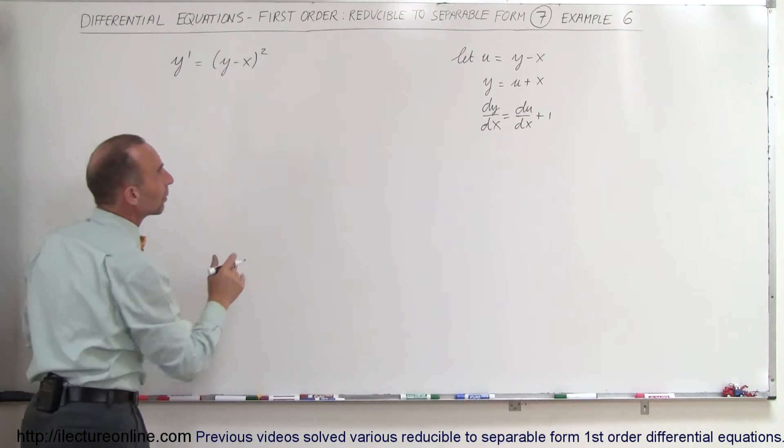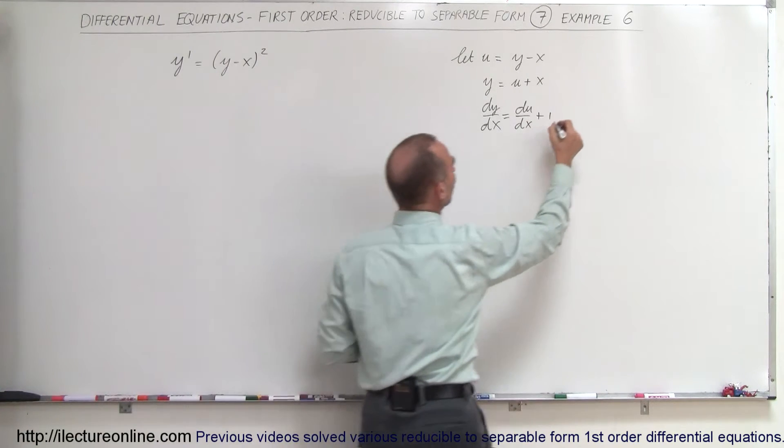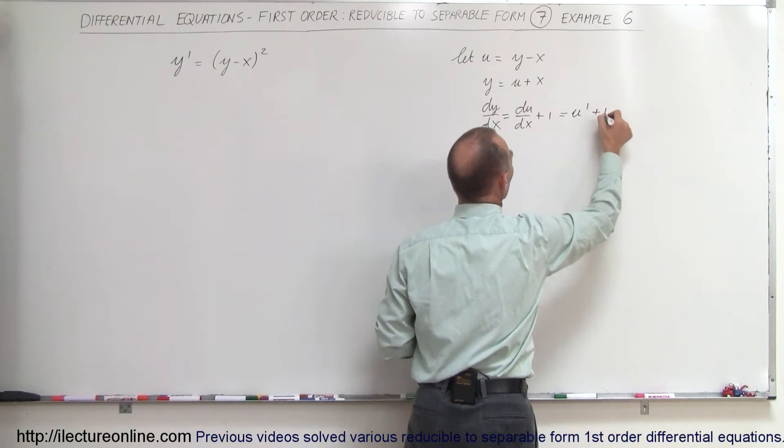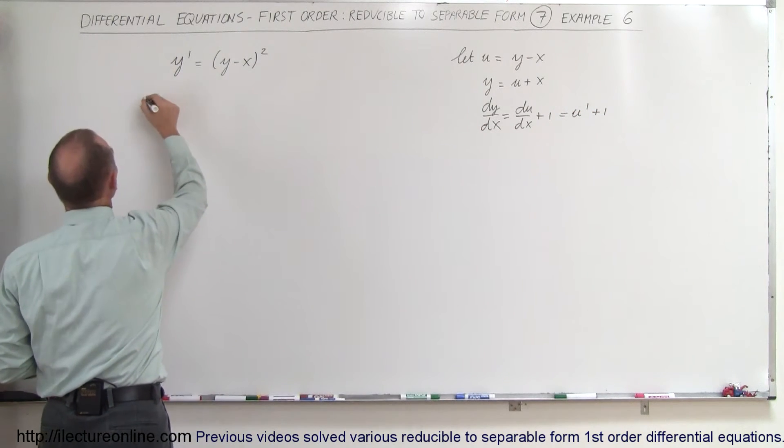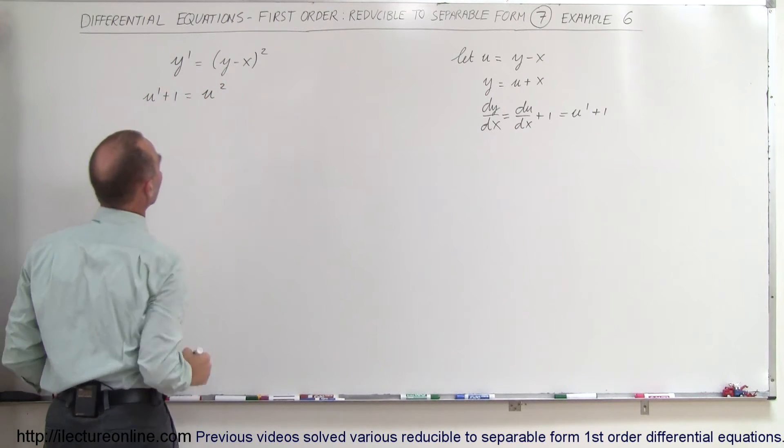So if we make that substitution, let's see what we get. y' can be written as u' plus 1. So for ease let's write it like that. The left side becomes u' plus 1 equals the right side u squared.